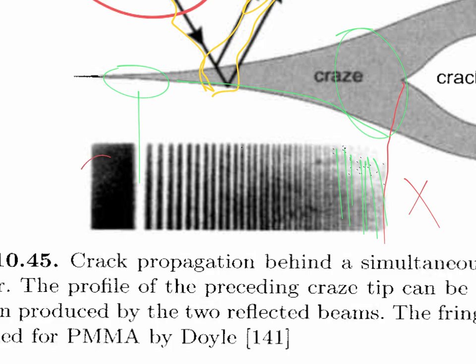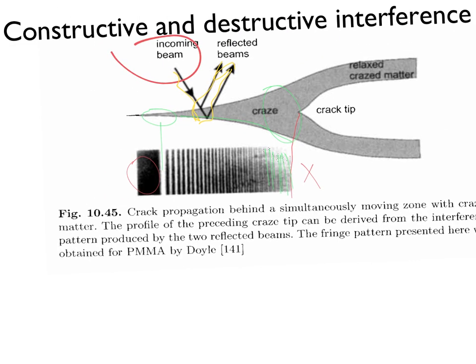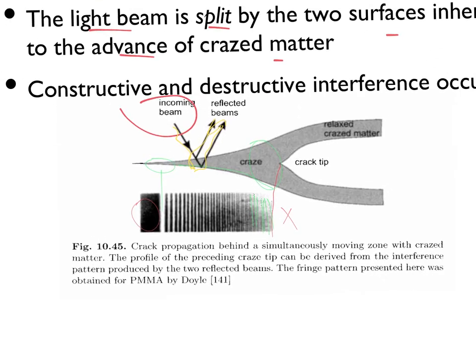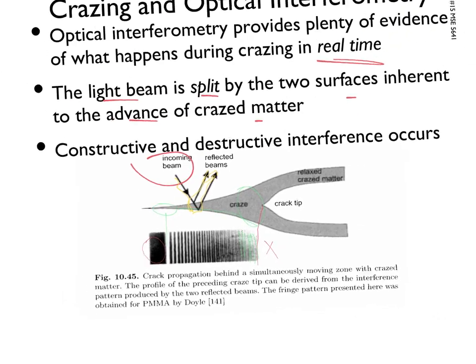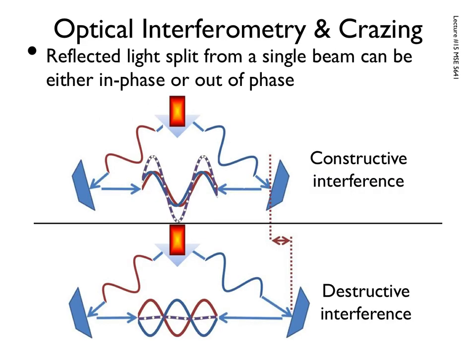Over here is the solid itself — not very interesting. But this is the basic phenomenon in which we can use optical interferometry to learn things about these structures in real time. We're looking through the craze, looking at the light bouncing off these surfaces, and also going through these crazed fibular zones and getting information out of that.